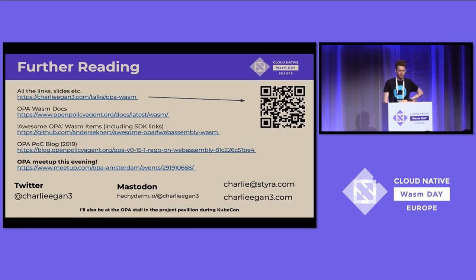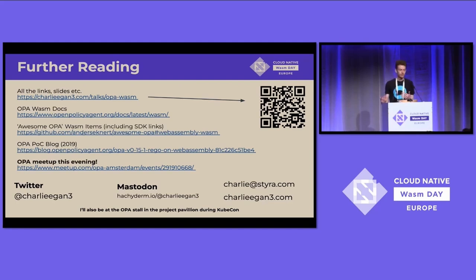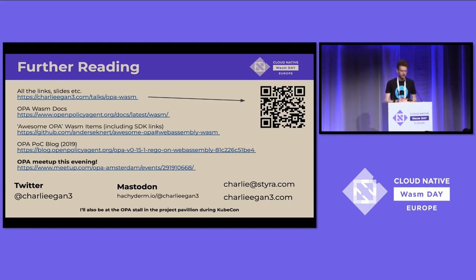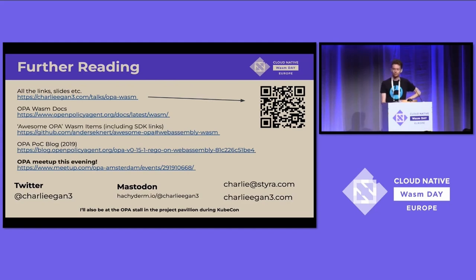If you want to get the slides or any of these links, I aggregate them all at the first link. You might want to go and read the OPA docs. My colleague Anders has an awesome OPA list containing links to various other OPA Wasm projects, including the SDKs I've used today. The code is available at the top of the first link, and the initial proof-of-concept blog is available on the Open Policy Agent blog as well. We have an OPA meetup this evening — I checked before lunch and there were still some spaces, so if anybody's interested please come along. You can find me at these places and I'll be at the OPA stall a fair bit. Thanks very much.